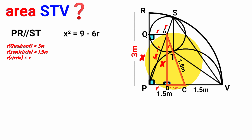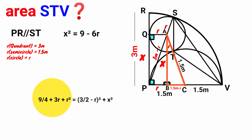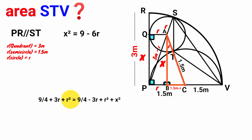Triangle ABC is a right-angle triangle, so we apply the Pythagorean theorem. The hypotenuse has length 1.5 + r, giving (1.5 + r)² = (1.5 − r)² + x². Writing 1.5 as 3/2: (3/2 + r)² expands to 9/4 + 3r + r², and (3/2 − r)² expands to 9/4 − 3r + r². The r² terms cancel and the 9/4 terms cancel, leaving 3r = −3r + x².